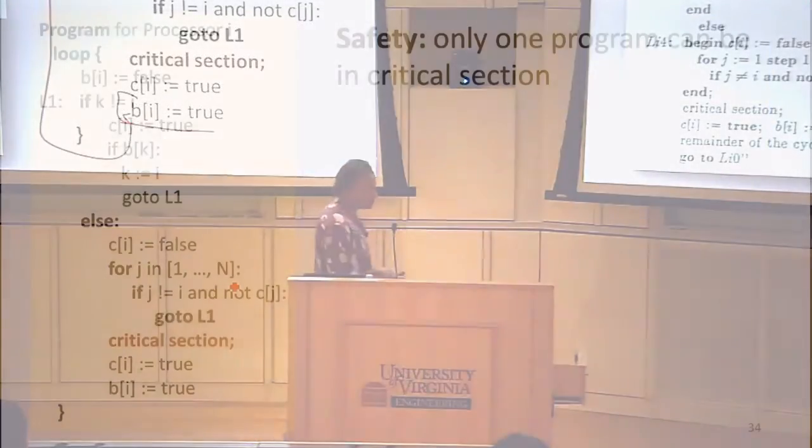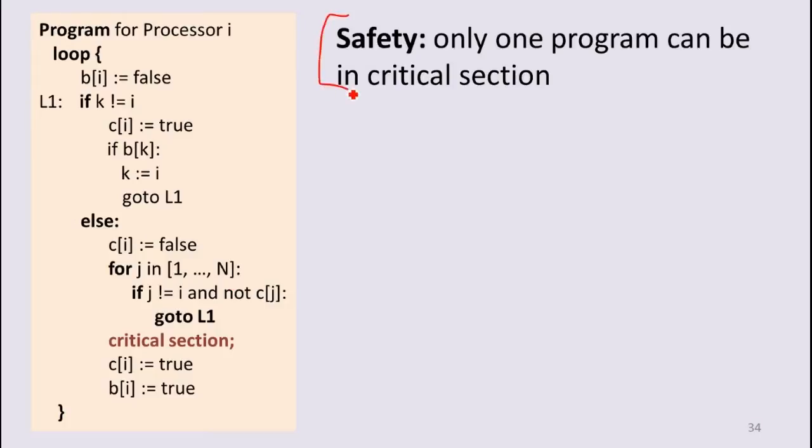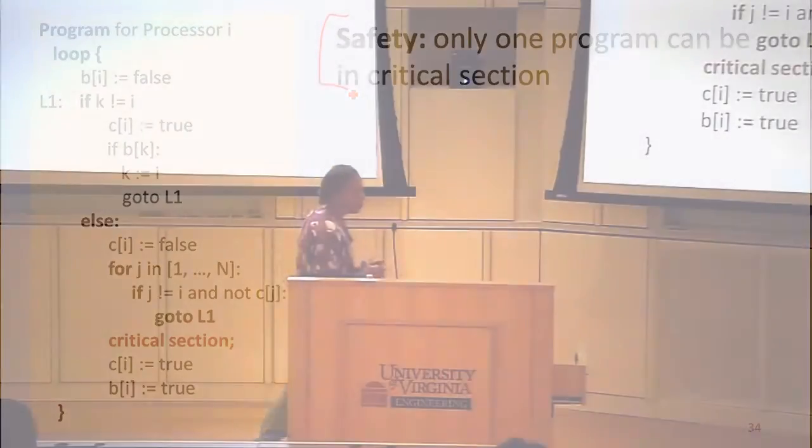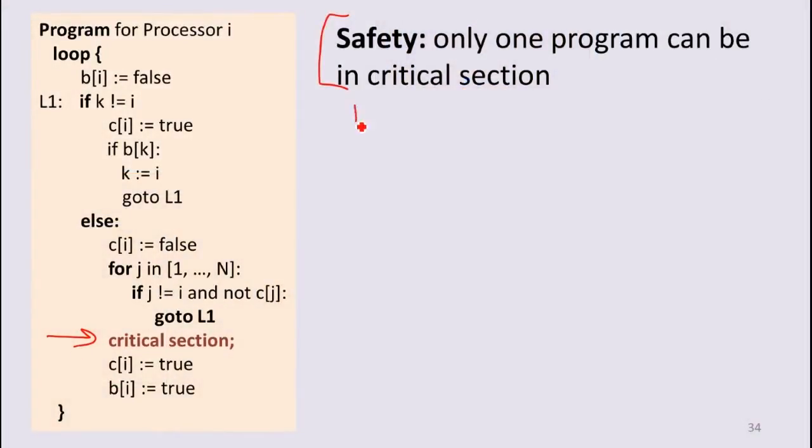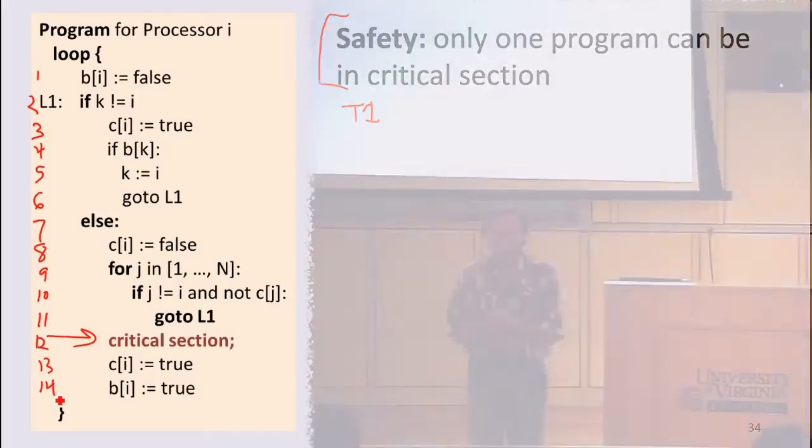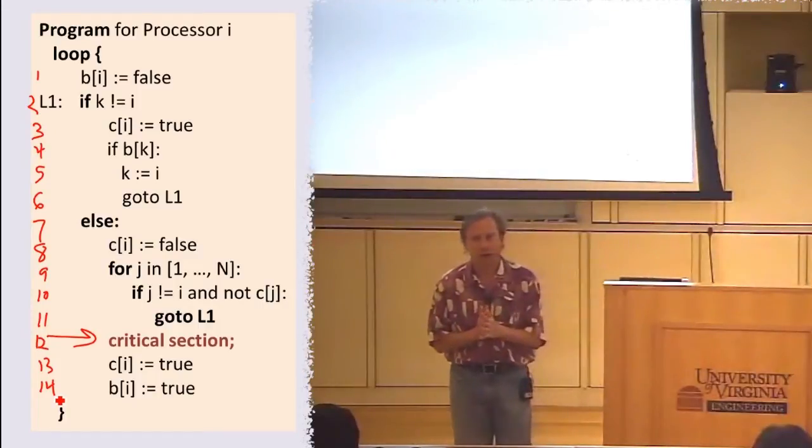The C array is the one that's important. We need to know that only one program can be in the critical section. That means there's no way to interleave the executions of two threads where they both can enter the critical section at once. Let's assume, so here's thread one. In order to get into the critical section, what has to be true? What's being checked before we enter the critical section?